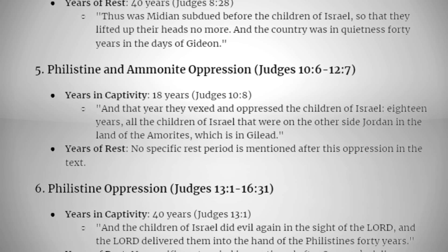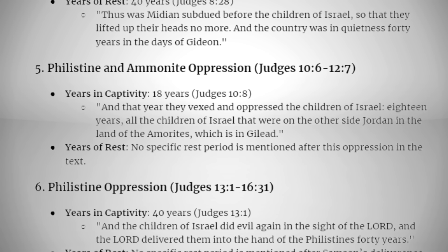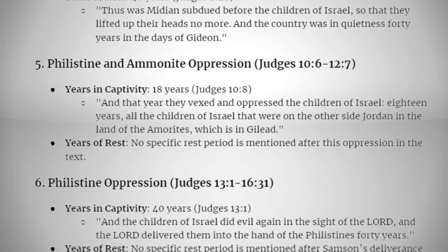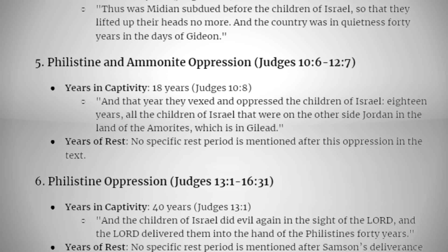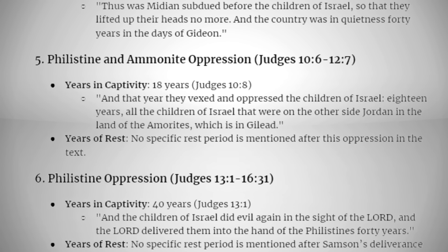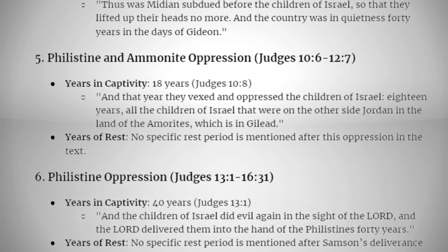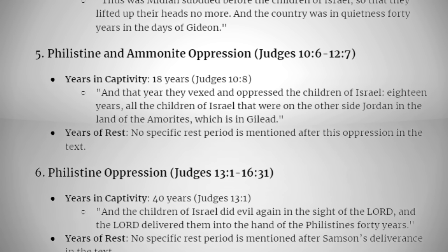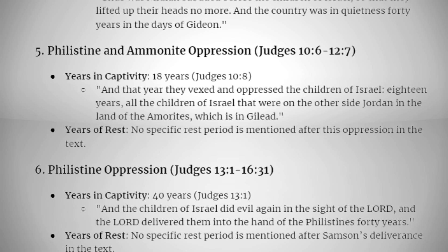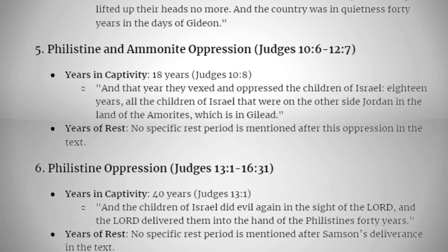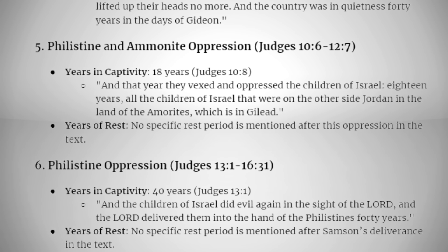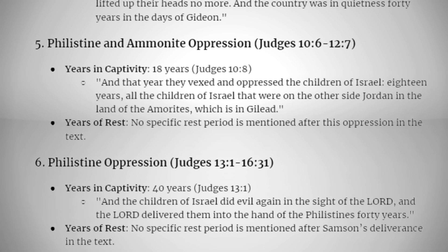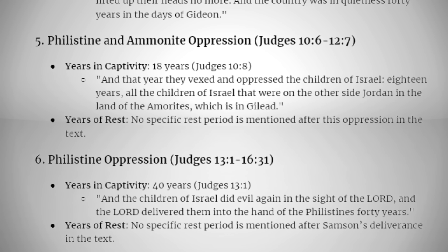Philistine oppression (Judges 13:1–16:31): years in captivity — 40 years. Judges 13:1: "And the children of Israel did evil again in the sight of the LORD, and the LORD delivered them into the hand of the Philistines 40 years." Years of rest: no specific rest period is mentioned after Samson's deliverance in the text.